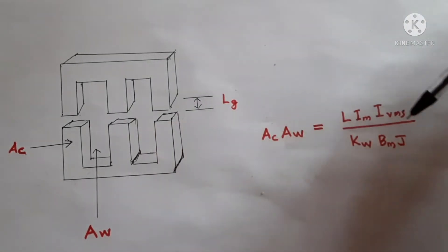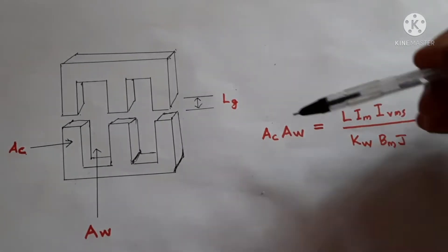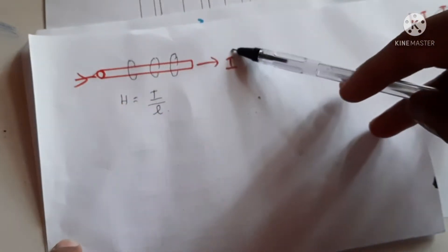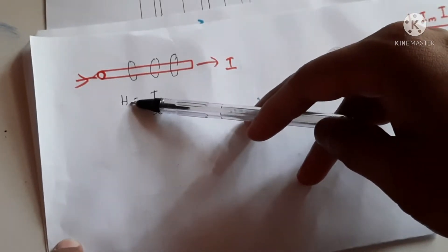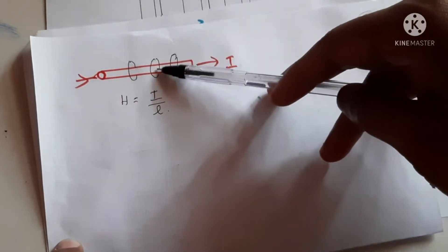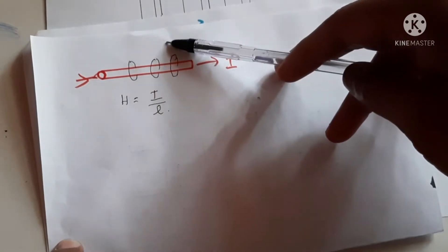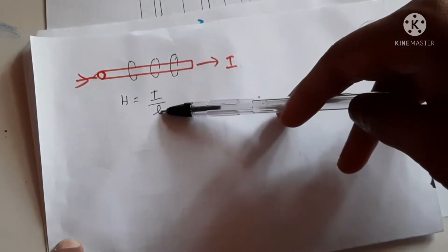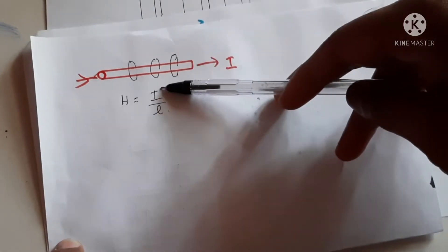Now we are going to explain the term AC. If we have a wire and a current is passing through it, a magnetic field is generated whose value is given by the current through it. As more current flows, the magnetic field strength increases. If we take a point away from this conductor and measure the magnetic field at that point, it will be less — so as length increases, the magnetic field strength decreases.